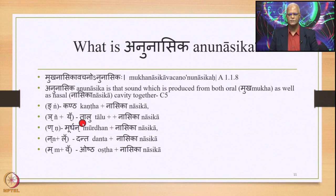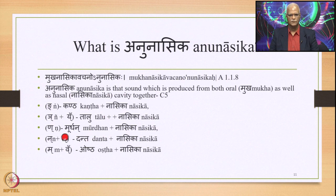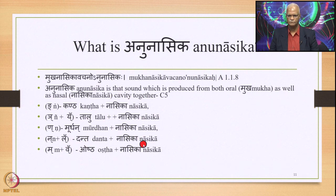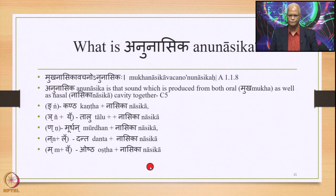Two sounds are produced from Talu in the oral cavity and Nasika. Then we have Vana produced from Murdhan and also Nasika. Then Na and nasal L, which are produced from Danta in the oral cavity and Nasika. Finally, M and nasal V are produced from Ostha and Nasika. These are the Anunasika consonants.